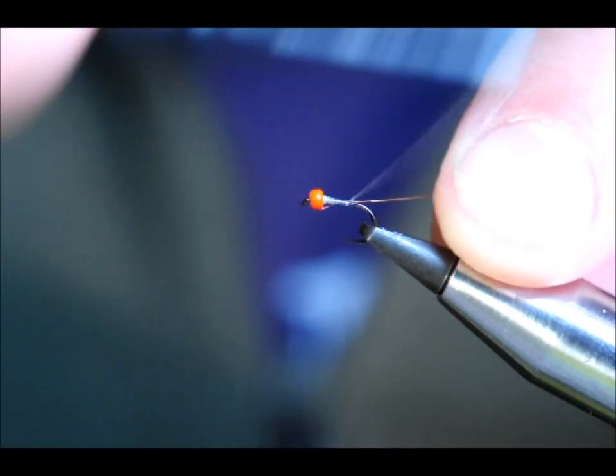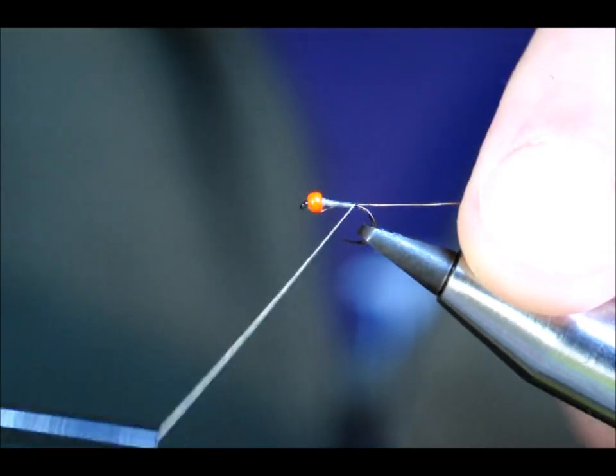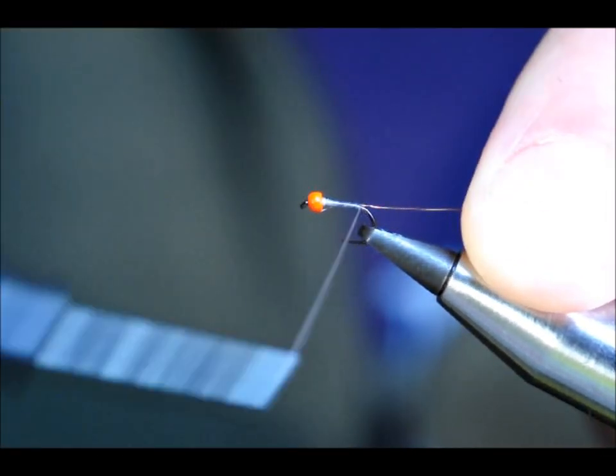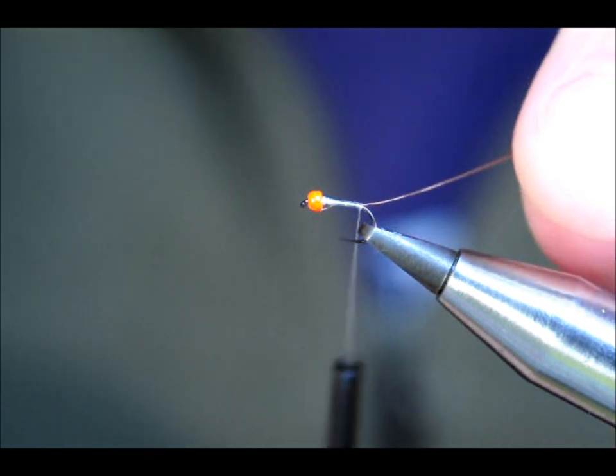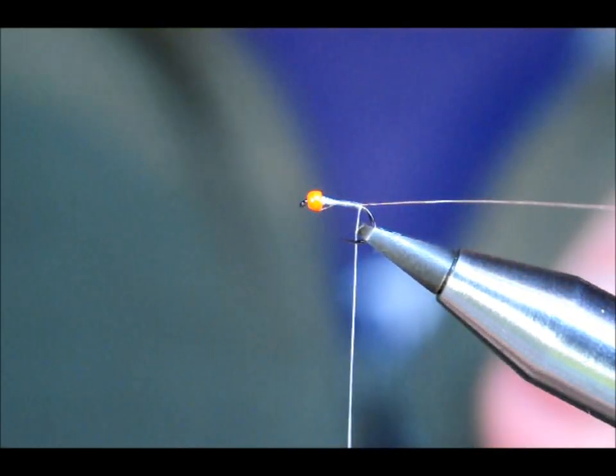This one doesn't have a tail. Take it back. I'm using the full length of the hook shank for this.